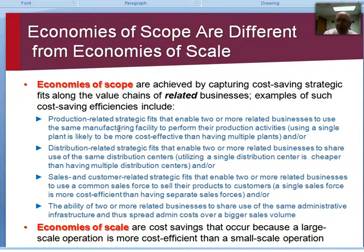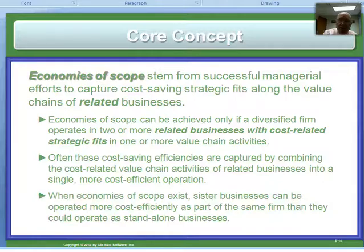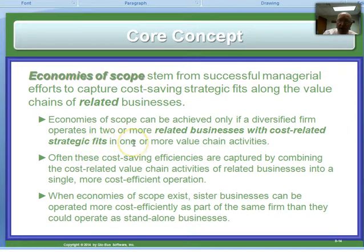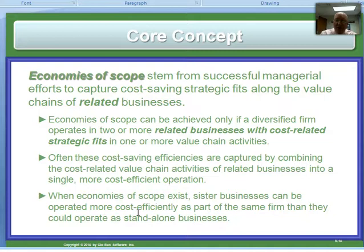I use the example of Procter & Gamble: when they have a particular research discovery on something that works well in dishwasher soap, might that also not work for general cleaning soap, laundry soap, and personal soap? That knowledge can be shared across several entities. Economies of scope help businesses with cost-related strategic fits, capturing cost savings — and this is how you get the better off test where they're better together than separately, or the one plus one equals three synergy.